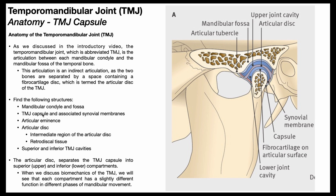Now let's find the TMJ capsule and the associated synovial membranes. The joint capsule is shown in a bluish color — you can see it all the way around. And then, a little bit deep to that, this reddish structure represents the associated synovial membranes, which secrete the synovial fluid that fills the joint capsule.